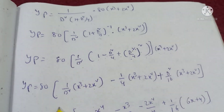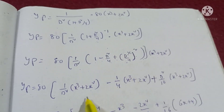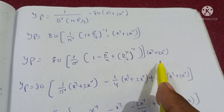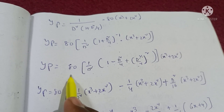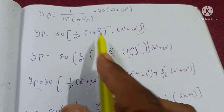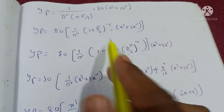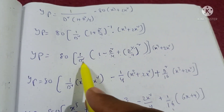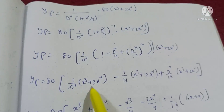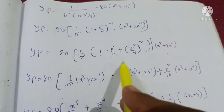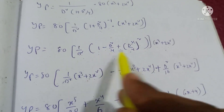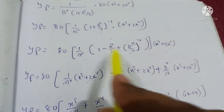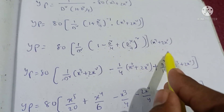This gives 1 by D squared into the expression: 1 minus 1 by 4 D squared plus 1 by 16 D to the power 4 into x cubed plus 2x squared. Applying term by term: 1 by D squared into x cubed plus 2x squared, minus 1 by 4 D squared term, plus higher order terms.